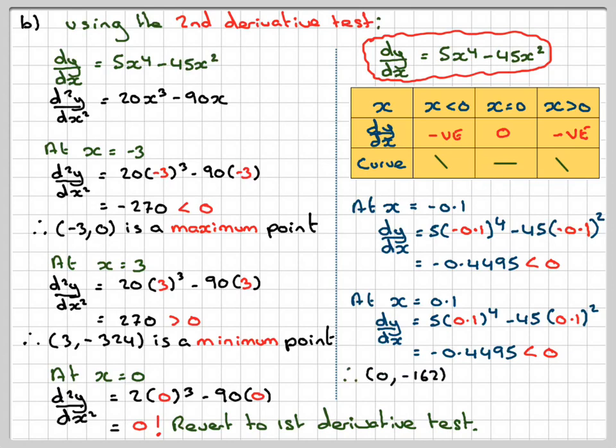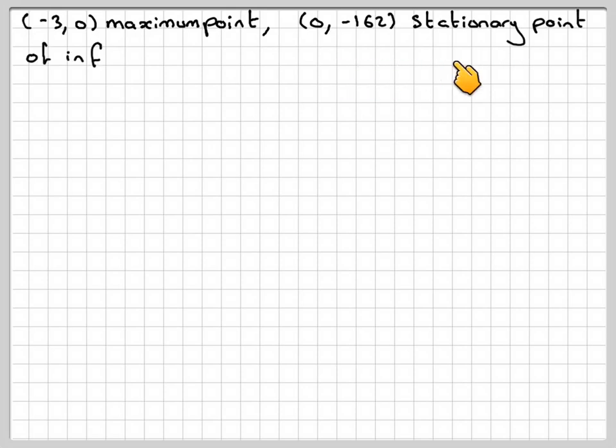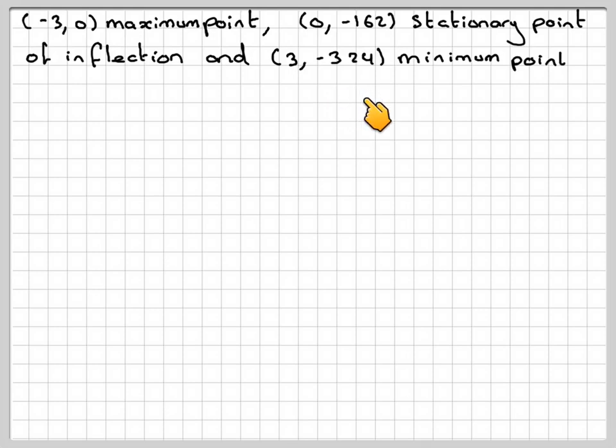It has a special name: (0, -162) is what's known as a stationary point of inflection. Later on, we'll look at non-stationary points of inflection. Therefore, (-3, 0) is a maximum point, (0, -162) is a stationary point of inflection, and (3, -324) is a minimum point.